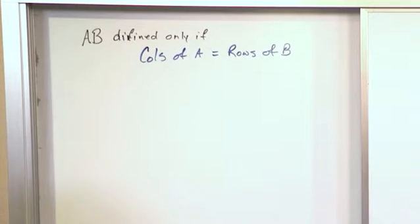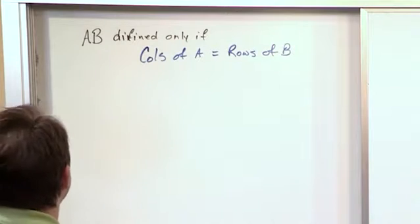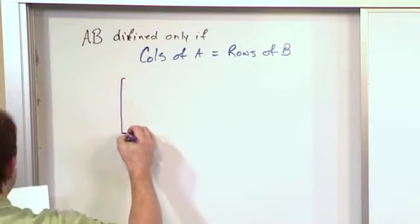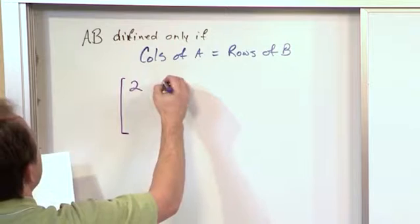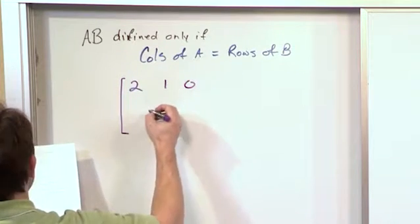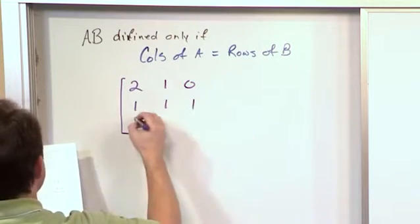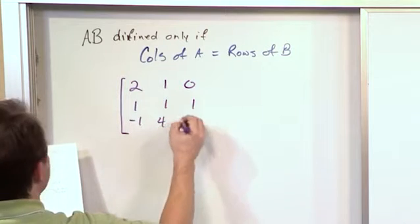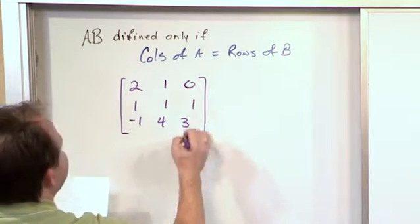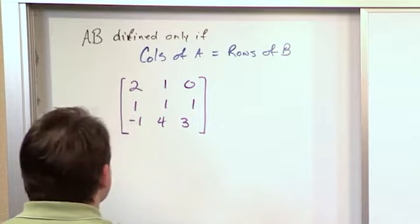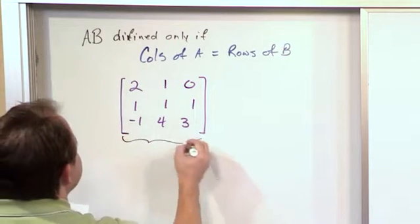So let's say I have matrix A and matrix B. This could be matrix A. Matrix A would be 2, 1, 0, 1, 1, 1, negative 1, 4, 3. This is a 3 by 3 square matrix. And we're going to call this matrix A.